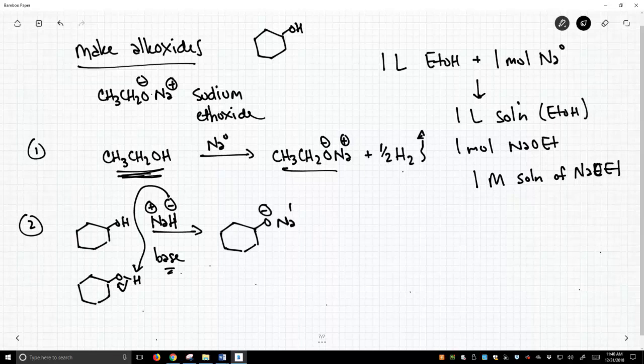We get O-, and a plus. Again, we've made an alkoxide. Again, we simply form hydrogen gas, and what's that do? It bubbles away and leaves our alkoxide.